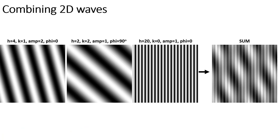Just as with 1D waves, 2D waves can be summed. For example, summing h=4,k=1 (amplitude 2), h=2,k=2 (amplitude 1), and h=20,k=0 (amplitude 1, with a phase shift) produces a complex pattern across the image. Adding more waves creates increasingly detailed patterns, and with thousands of waves one could reconstruct any image.